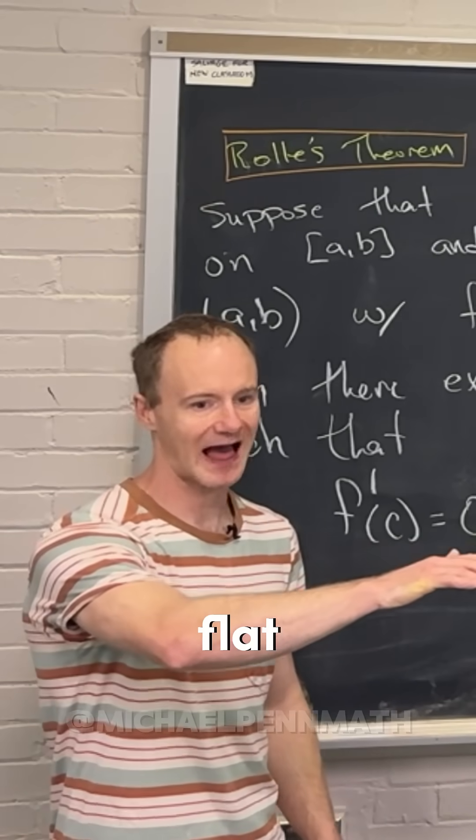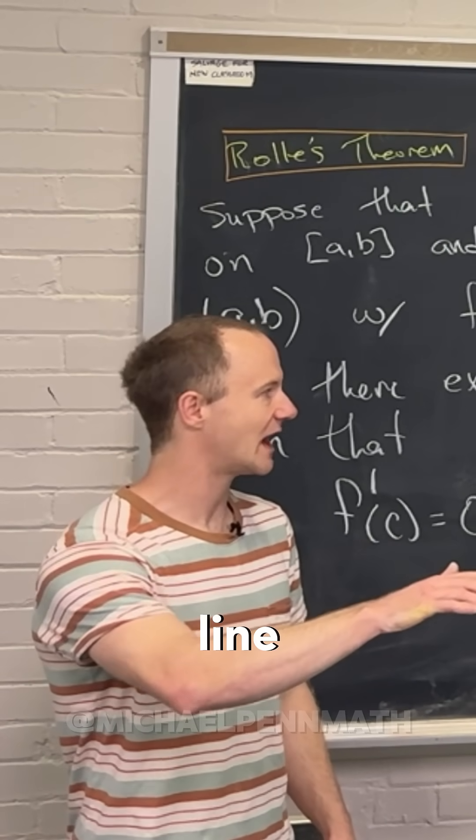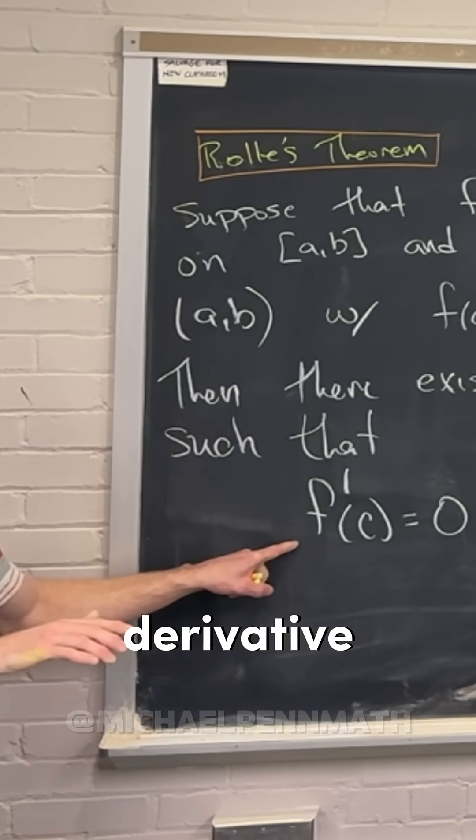Now you might say, well, I could have a flat line, right? But if I have a flat line, that also gives me a place where the derivative is zero.